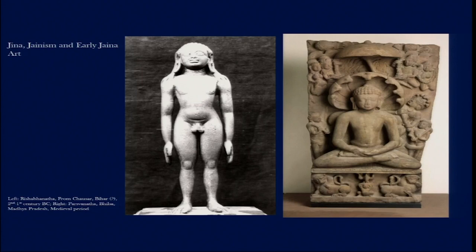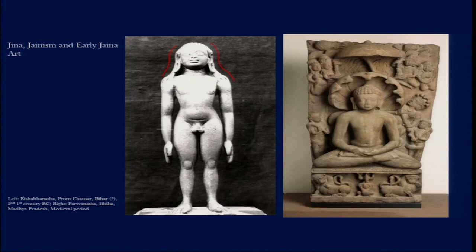These overarching themes in Jainism make their impact on the sculptures found in the Jain context. Even though these are basic characteristic features of Jain figures across the subcontinent, there are also features through which we can distinguish one Tirthankara from another. For example, the image of Tirthankara Rishavanatha from Chausar in Bihar, made between the 2nd and 1st century BC, has open locks of hair — a feature associated exclusively with Rishavanatha. When we see these open locks, we immediately identify the figure as Rishavanatha.